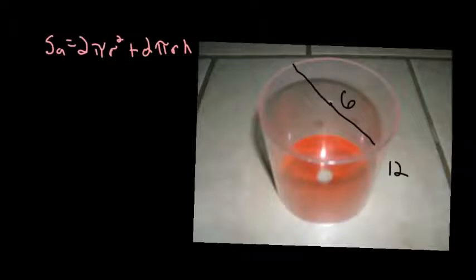So on this figure I have a diameter of 6 and a height of 12. So we need to take that diameter and find the radius. So if the diameter is 6, the radius would be half of that, which would be 3.